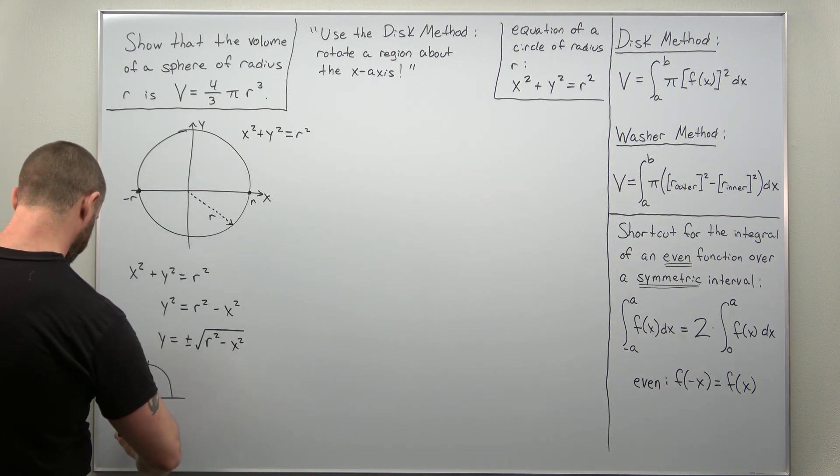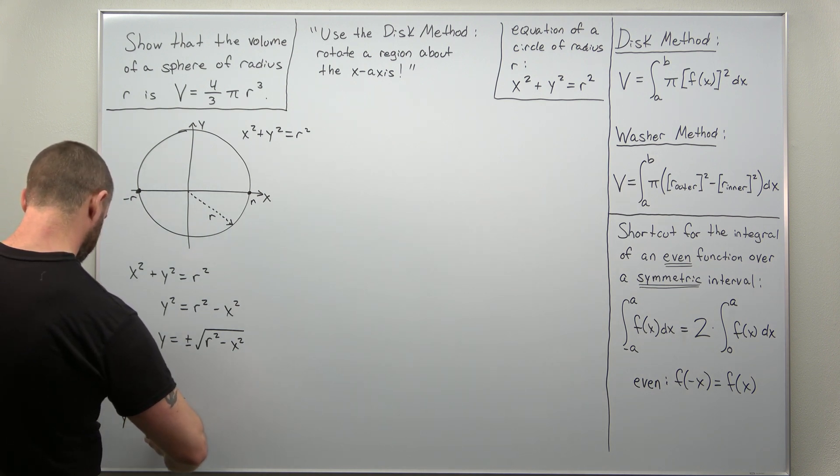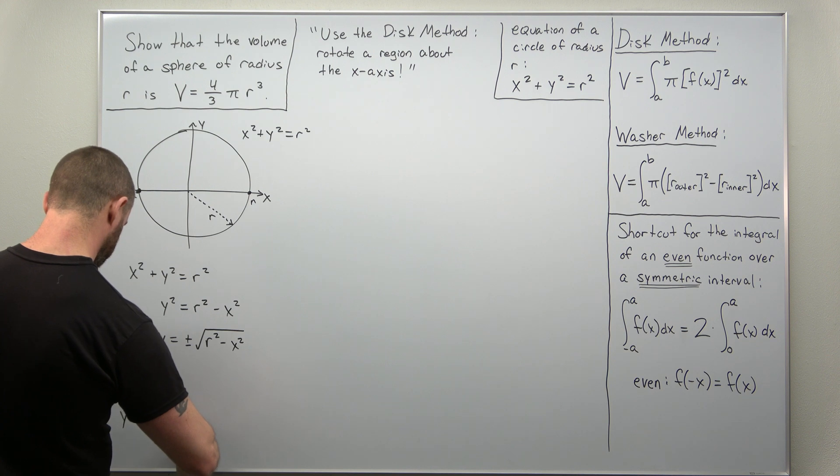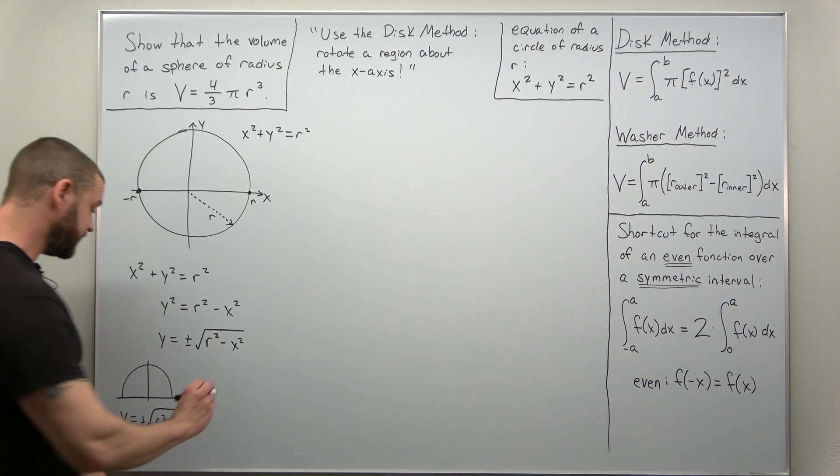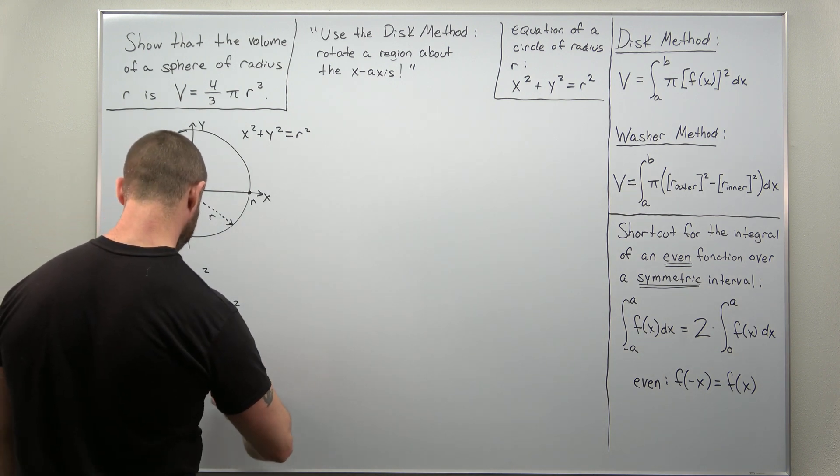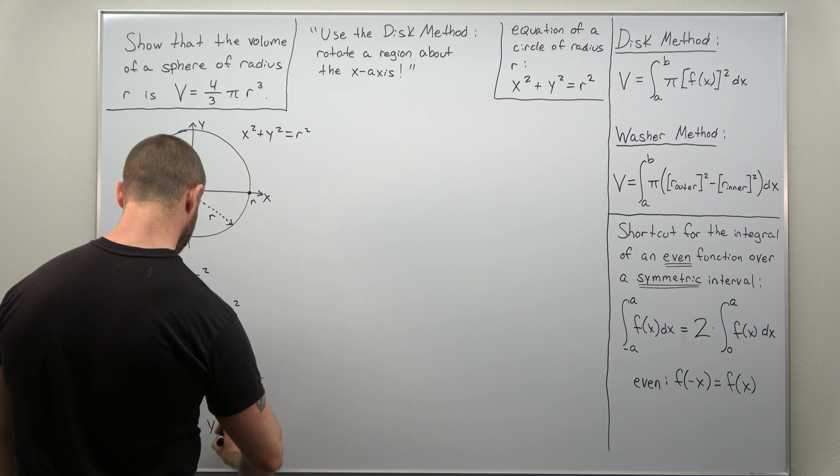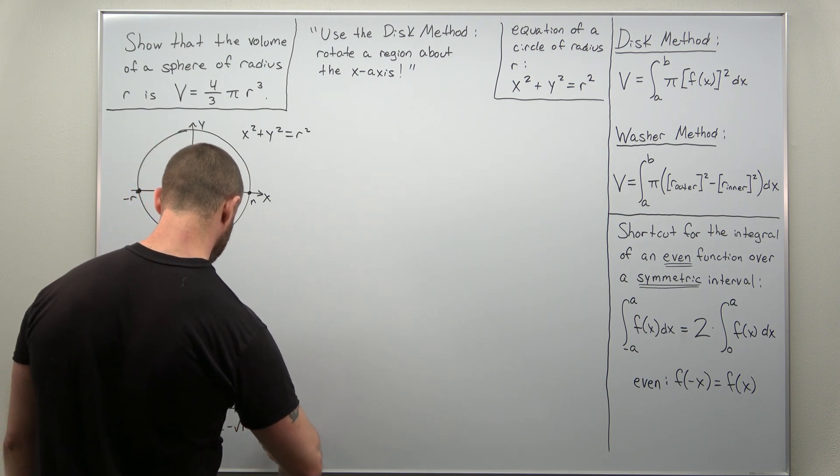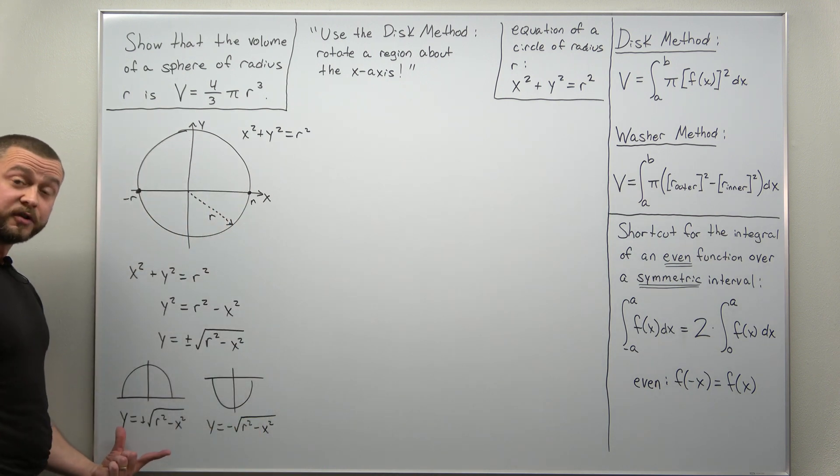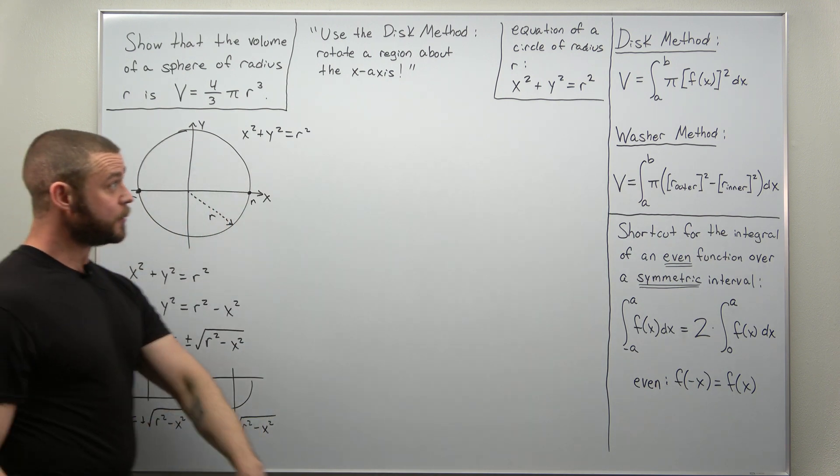So worth stating it here, the upper portion of the unit circle or the circle of radius r that corresponds to the positive root, and the negative, that corresponds to the bottom portion of the circle, and that would be negative the square root of r squared minus x squared. We're just going to use the positive root.